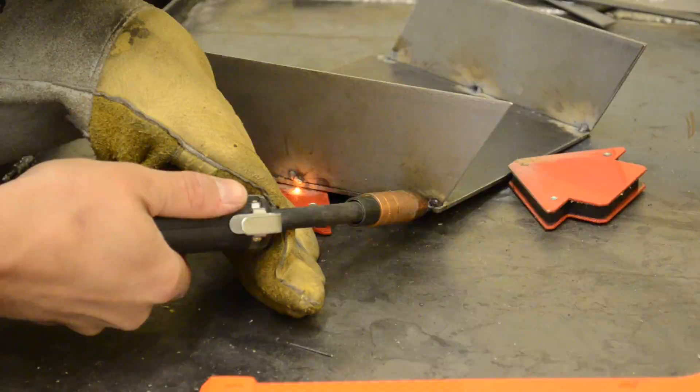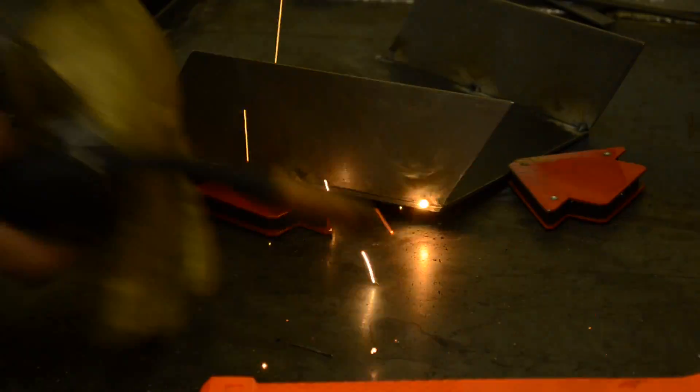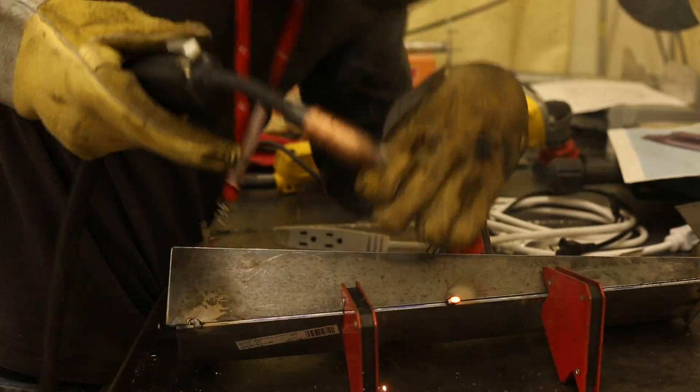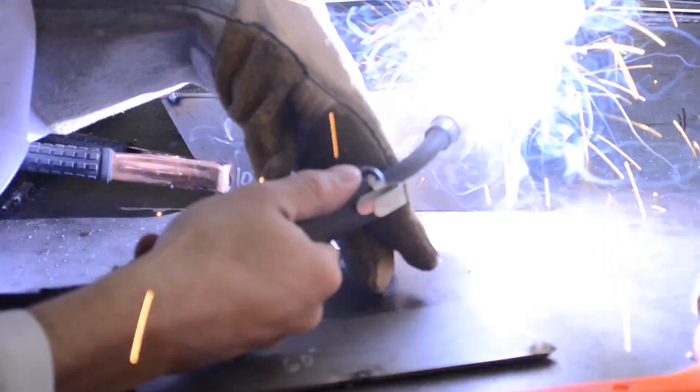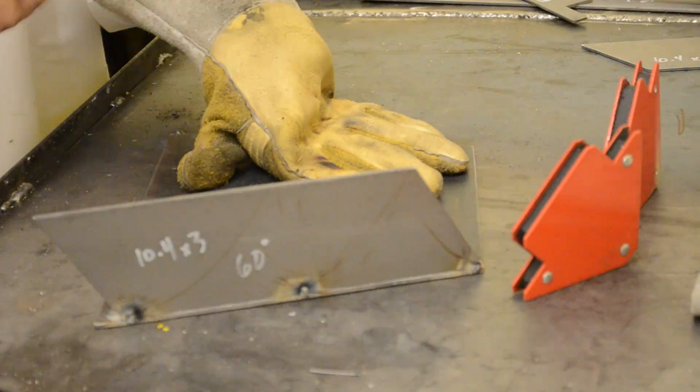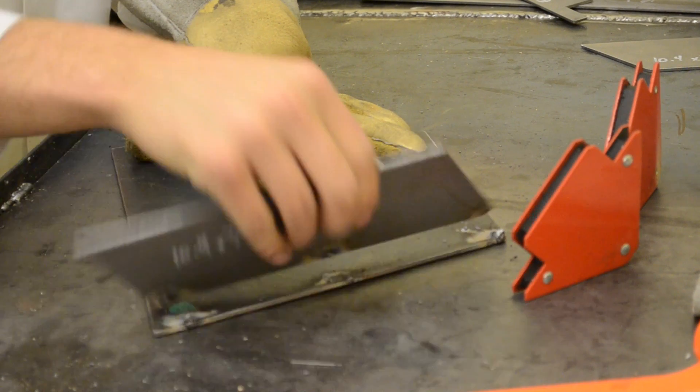This type of welder is called a MIG welder. It feeds a thin wire out the end of the gun and uses electric current to melt the metals together. It is important to tack weld the metal first. A tack weld is a small weld placed every couple of inches to hold the metal in place. This prevents the extreme heat from curling the metal as you weld. It also makes it easy to take apart if you make a mistake.